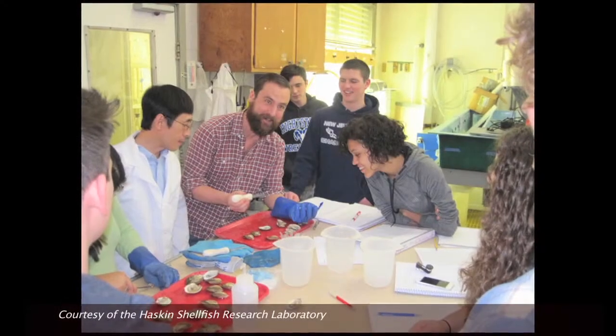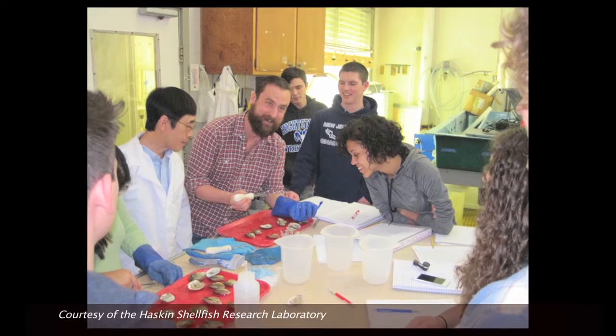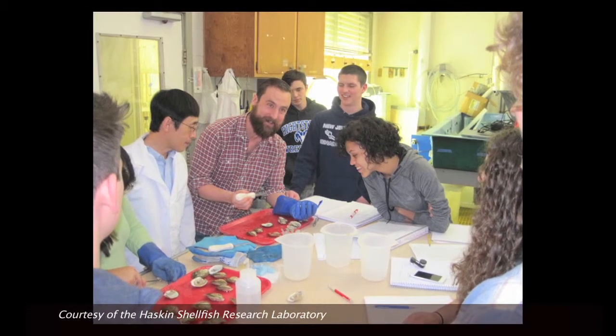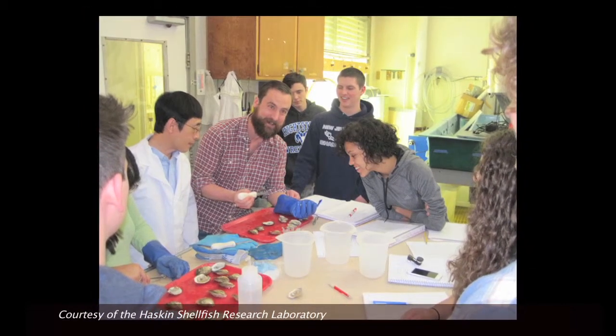If they're sterile, they also have better meat quantity in the summer. So at Rutgers, we produce a new method: a tetraploid oyster. When it's crossed with diploid, it produces 100% triploid. So tetraploid oyster is what we produce here at Rutgers. Now it's used all over the world to produce triploid oysters.